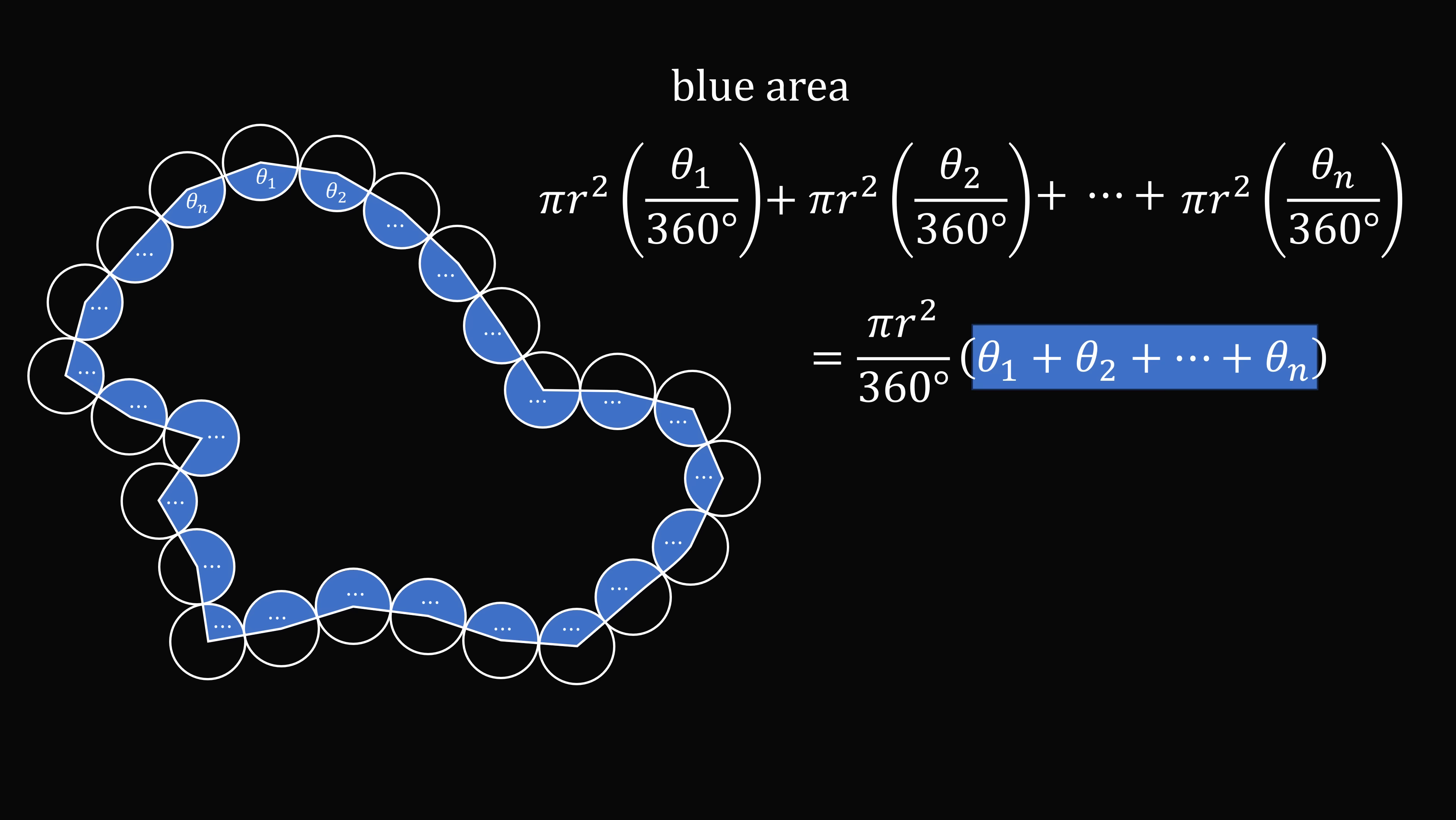But now we know what the sum of theta 1 to theta n is. We know that the sum of all of these n angles will be equal to n multiplied by 180 degrees minus 360 degrees. We simplify this to get pi r squared multiplied by n over 2 minus 1, and that's the blue area.